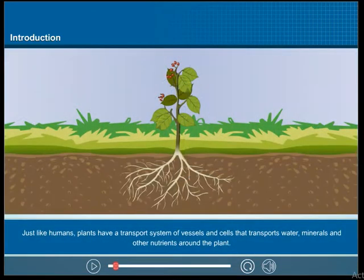Just like humans, plants have a transport system of vessels and cells that transports water, minerals, and other nutrients around the plant.